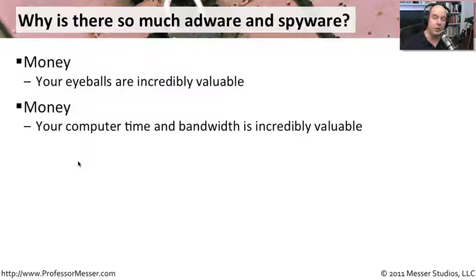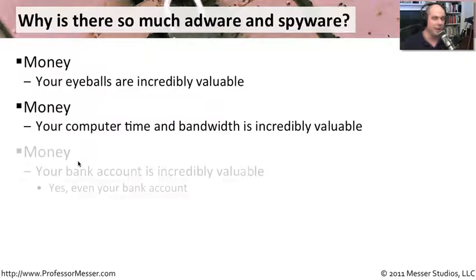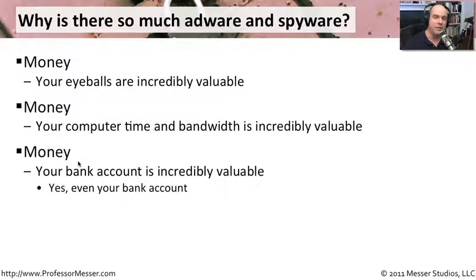Another reason is money. Your computer, the bandwidth to your computer, and the time on your computer are very valuable. Embedding spyware or adware to run on your system becomes very lucrative. Distributing across a million computers is much easier than buying a million machines and sticking them in a data center. And the third reason is money — if I'm tracking your logins to your bank account and credit card information, I can access those accounts directly and start transferring money in and out, giving me a lot of control over your personal dollars.